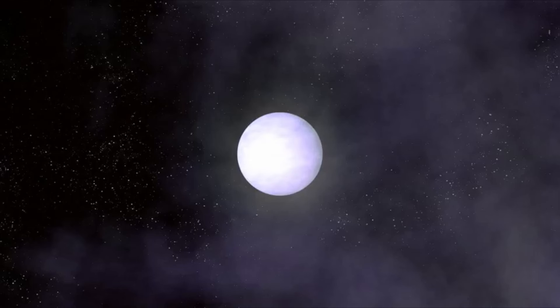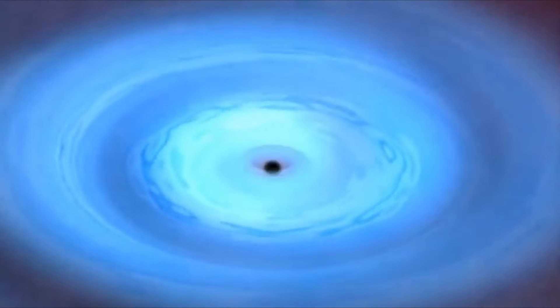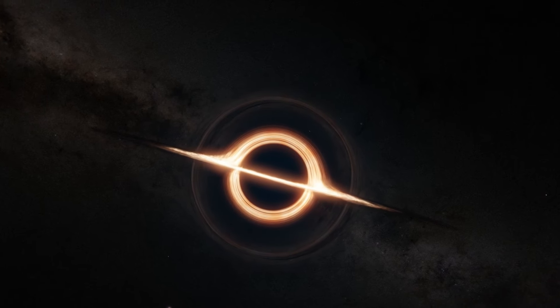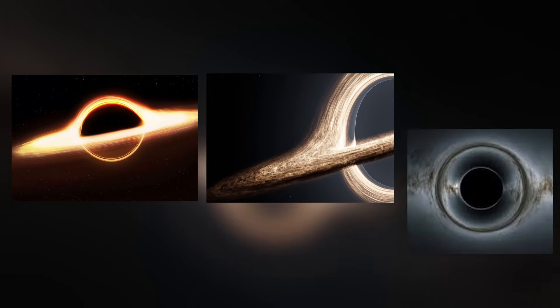Black holes are formed when massive stars two to three times larger than our Sun collapse at the end of their life cycle. There are three main types of black holes: stellar, supermassive, and intermediate.